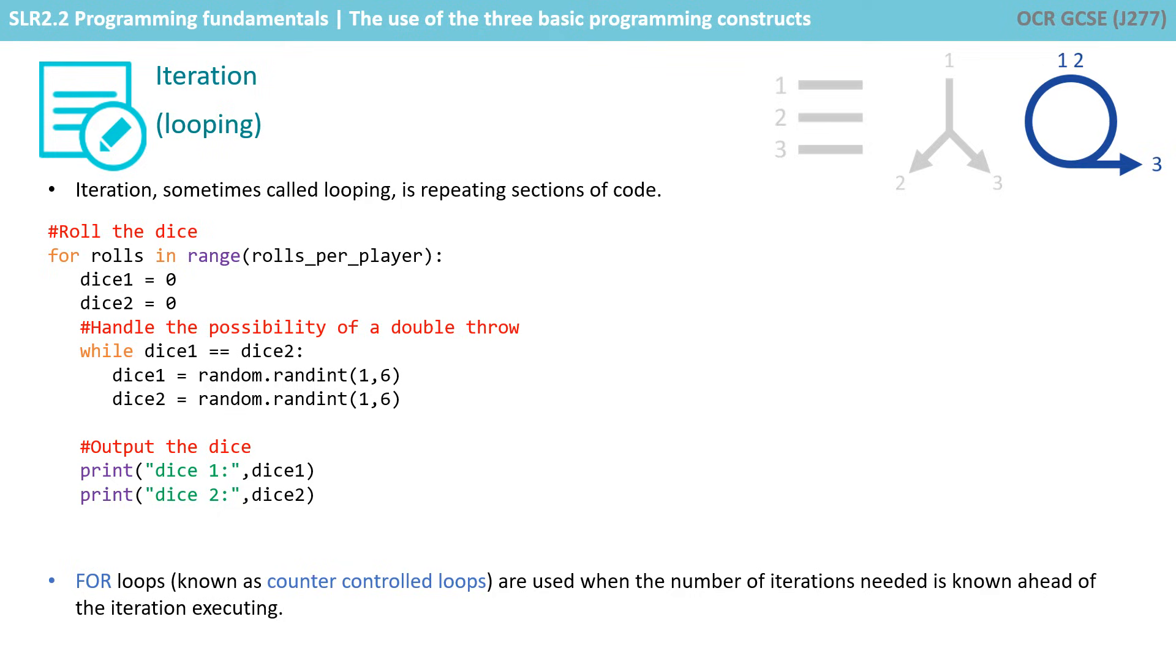For example, here we're saying for roles in range, roles per player. If roles per player was nine, it would be for roles in range nine. So we know the number of times we want to execute or iterate, repeat this code.